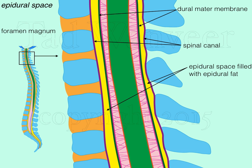The superior boundary of the epidural space filled with epidural fat is the foramen magnum, and its lower boundary is the sacrococcygeal membrane.